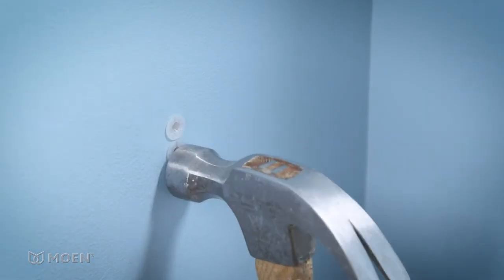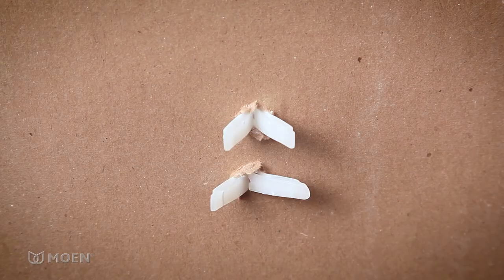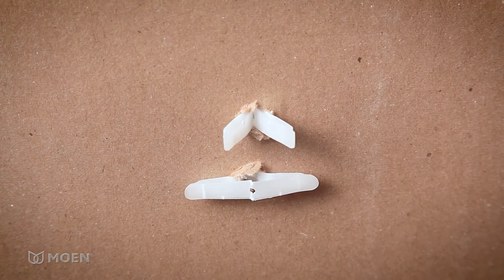Lightly tap the anchors with a hammer until flush with the wall. Then insert the red pin into each anchor to activate. An audible click indicates activation.